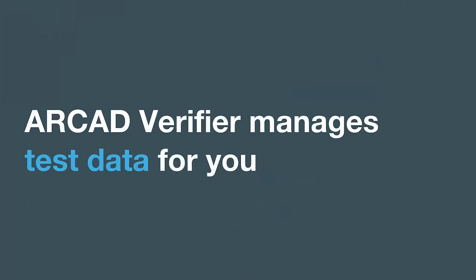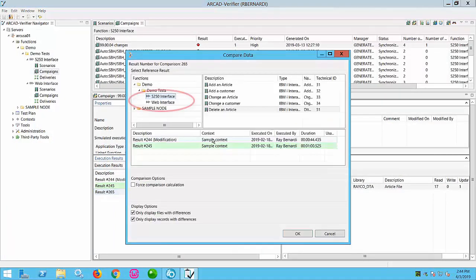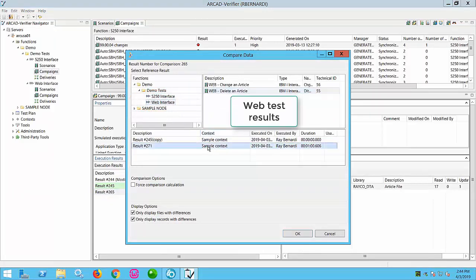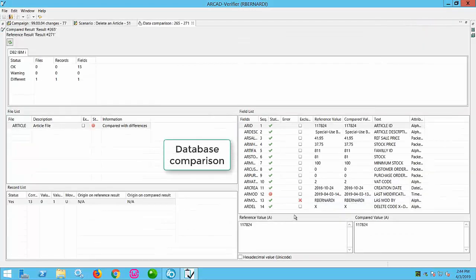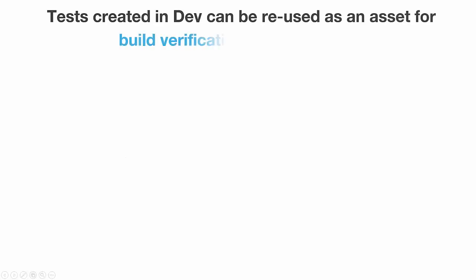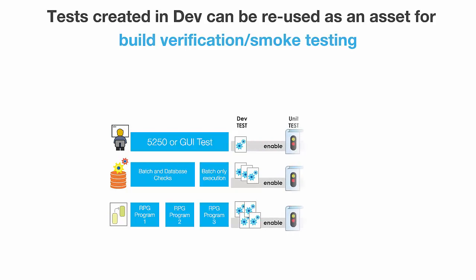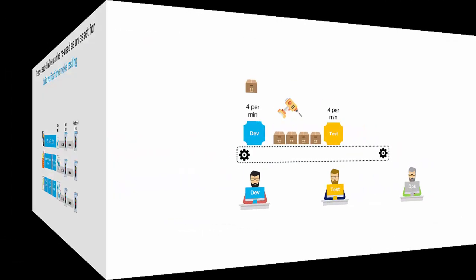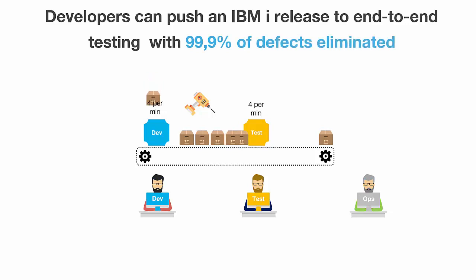You don't need specialist knowledge to use Arcade Verifier — you just need to know how to run your own software. Click a button to create a scenario and Verifier transparently manages the environments and the test data for you. You choose which test data to use, and Verifier protects and resets that data after every use. Verifier is very good at saving tester knowledge for reuse later in the process. Developers record their unit and functional tests one time to check their changes, and these are then reused as an asset during the integration phase for build verification and smoke testing. Because defects are localized so early in the process, developers push a fully tested IBM i release to end-to-end testers with 99.9% of defects eliminated.